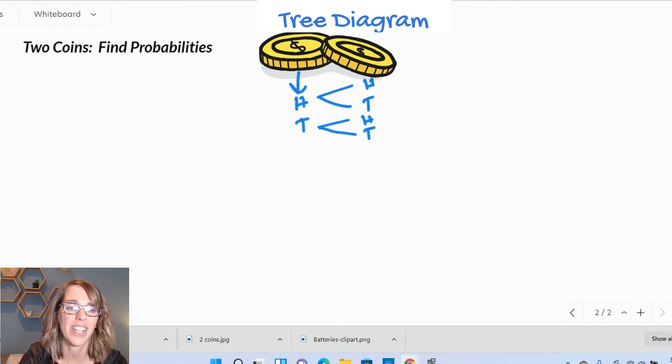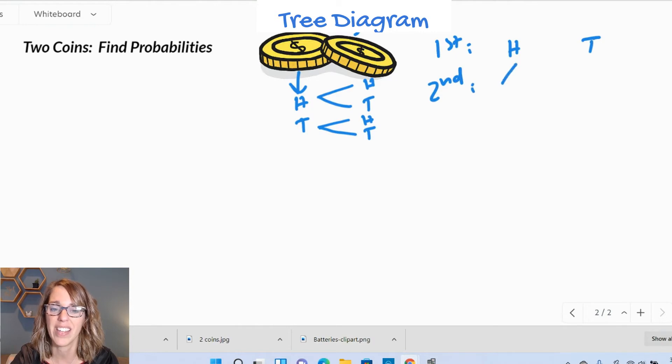This gives me a tree diagram. A tree diagram is a really great way of looking at all of your possible outcomes. It's usually oriented a little differently, so if I orient it this way, first coin, I can either get a heads or a tail. Second coin, I'm just going to turn this diagram on its side. Heads can be followed by either a heads or tail on the second coin. Tails on the first can be followed by heads or tail.